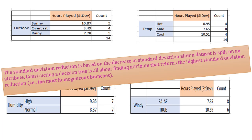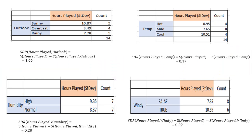Standard deviation reduction is based on the decrease in standard deviation after a dataset is split on an attribute. Constructing a decision tree is all about finding the attribute that returns the highest standard deviation reduction — that is, the most homogeneous branches. After subtracting the resulting standard deviation from the actual standard deviation, we get the table shown on the screen. The attribute with the largest standard deviation reduction is chosen for the decision node, and as you can see, outlook has the highest standard deviation reduction.